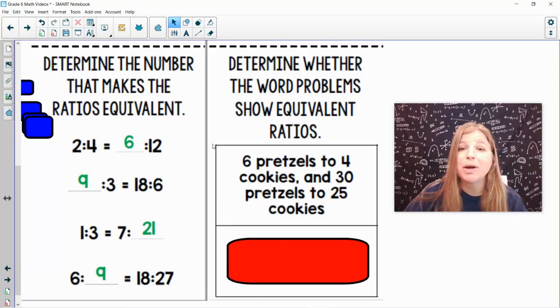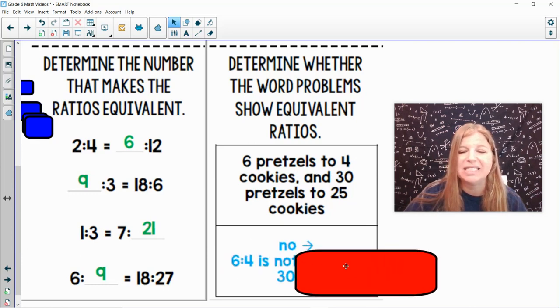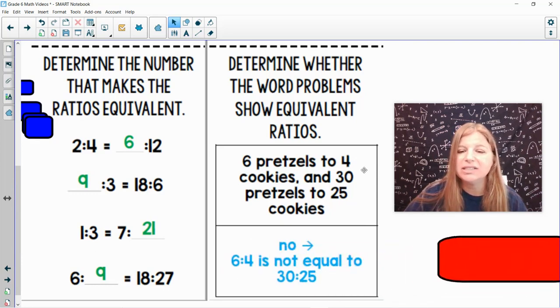And the last skill. Determine whether the word problems show equivalent ratios. 6 pretzels to 4 cookies and 30 pretzels to 25 cookies. Pretzel to pretzel would be 6 to 30. 6 to 30 is 1 to 5. Cookies to cookies, 4 to 25 does not simplify.